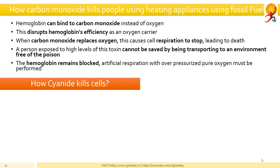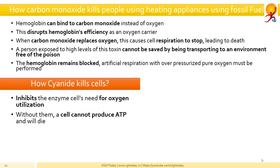How does cyanide kill cells? Cyanide acts by inhibiting the enzyme cells needed for oxygen utilization. Without these enzymes, the cell cannot produce ATP, which is the energy that we need to survive, and will die. Very small amounts of cyanide naturally occur in some food and plants. For example, cyanide is present in cigarettes and in smoke produced by burning plastics.